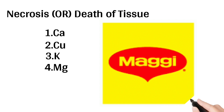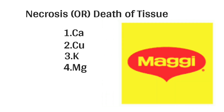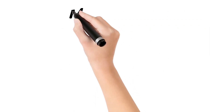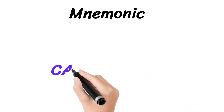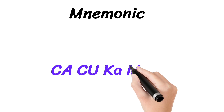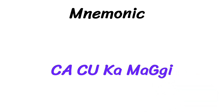The mnemonic for necrosis is based on an image of Maggie. The mnemonic is: 'KaKu Ka Maggie.' Here, 'kaku' means your father's brother and 'ka' means 'belongs to' in Hindi. Ca for calcium, Cu for copper, K for potassium, and Mg for magnesium.